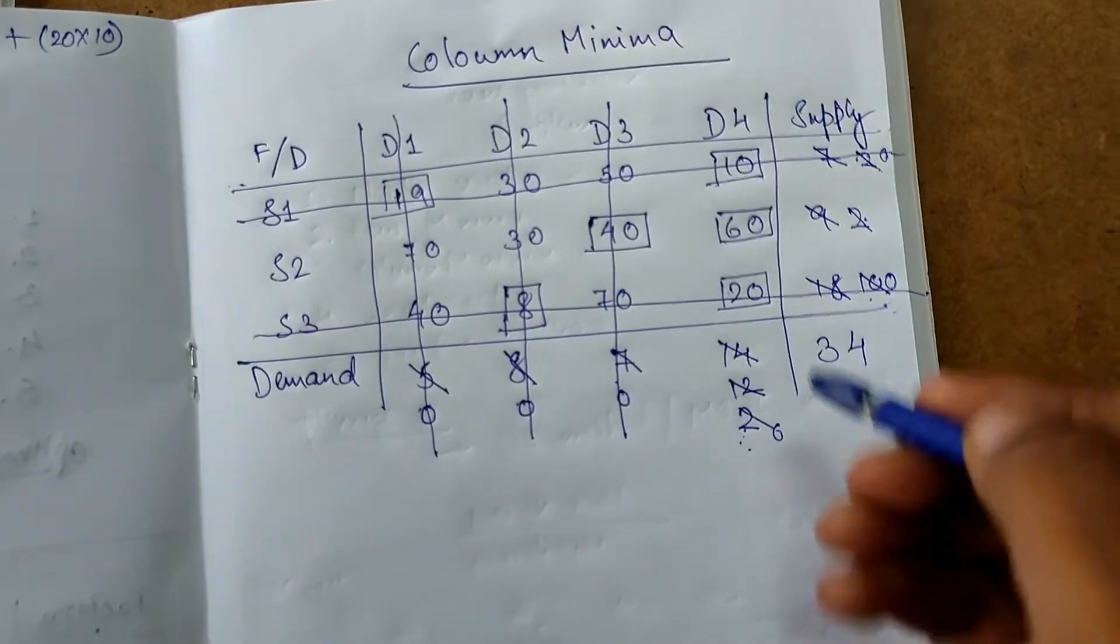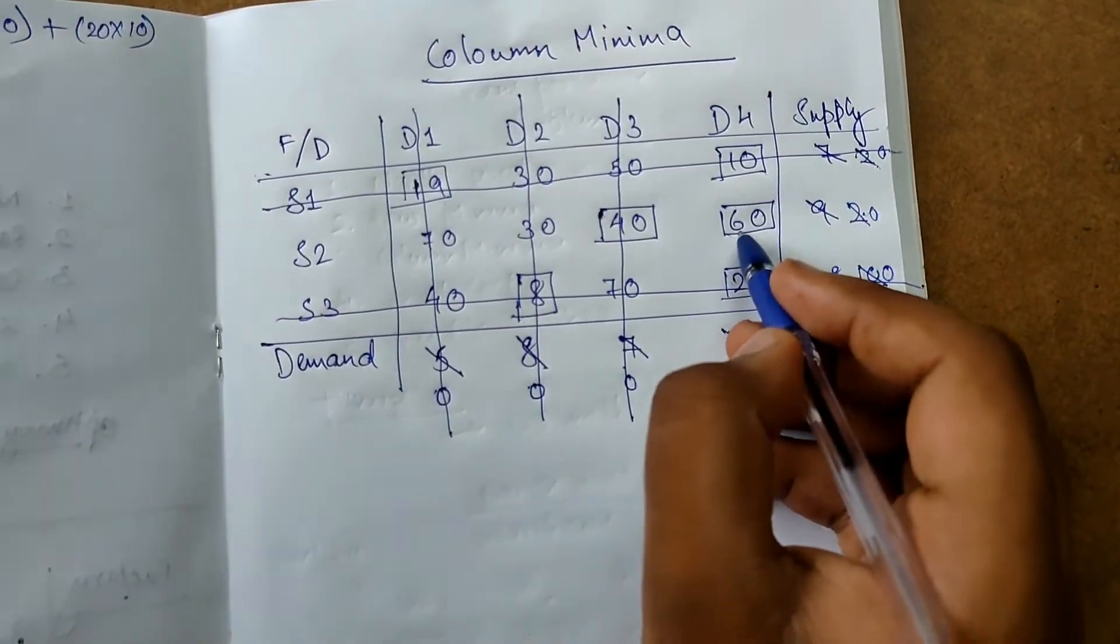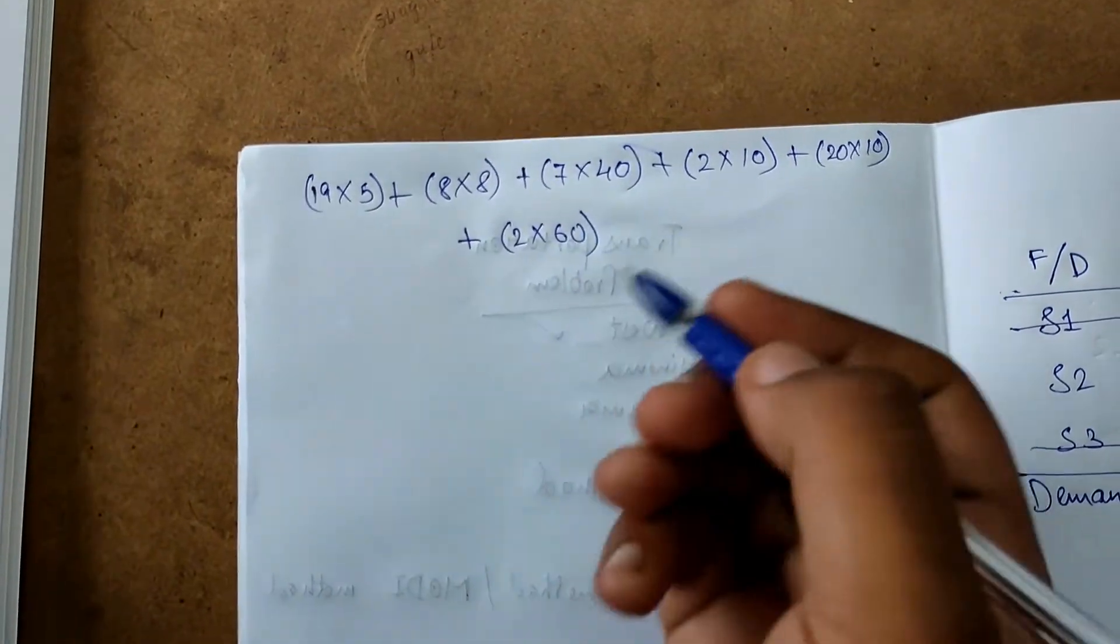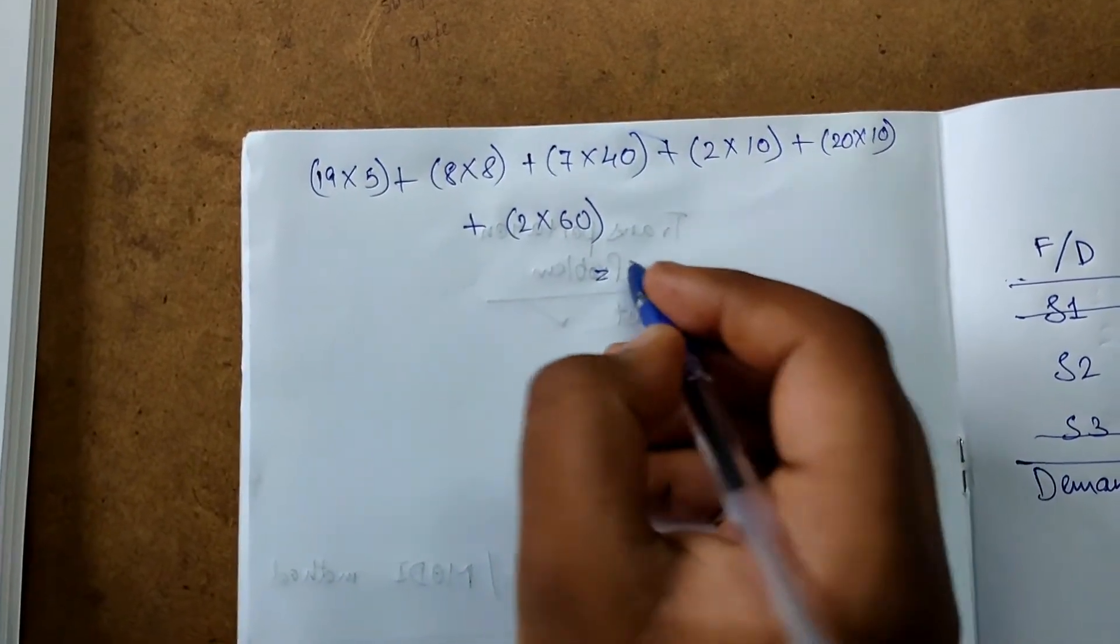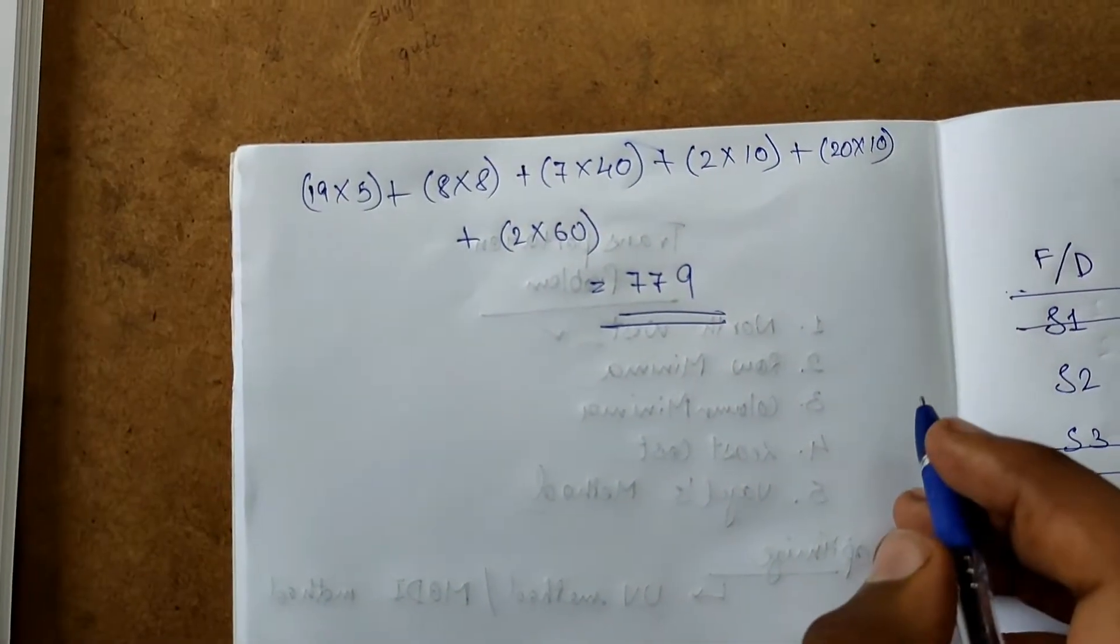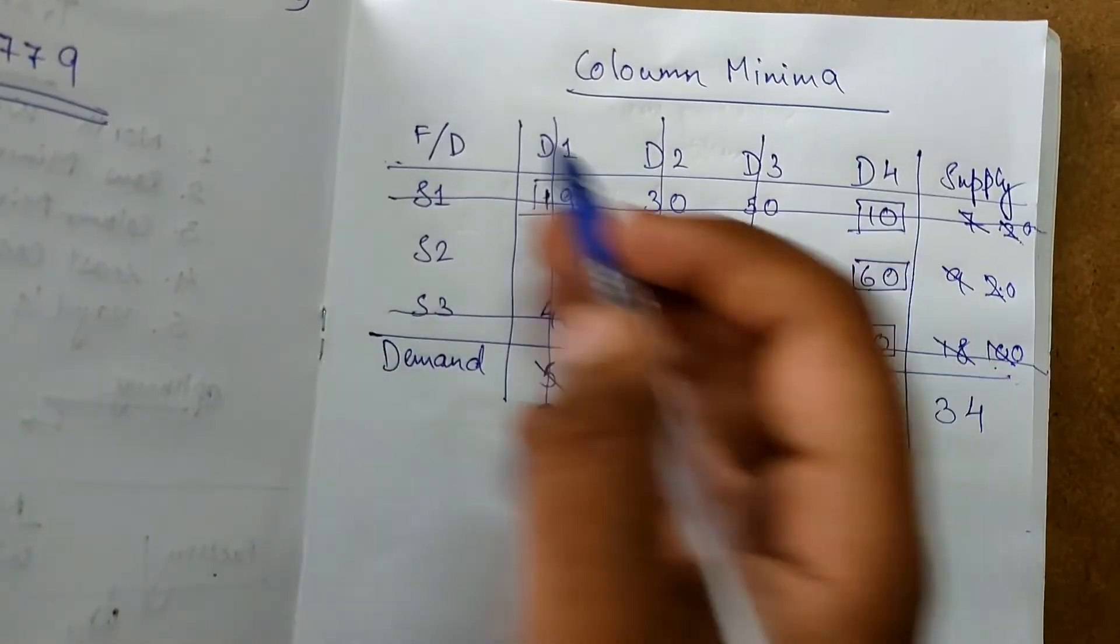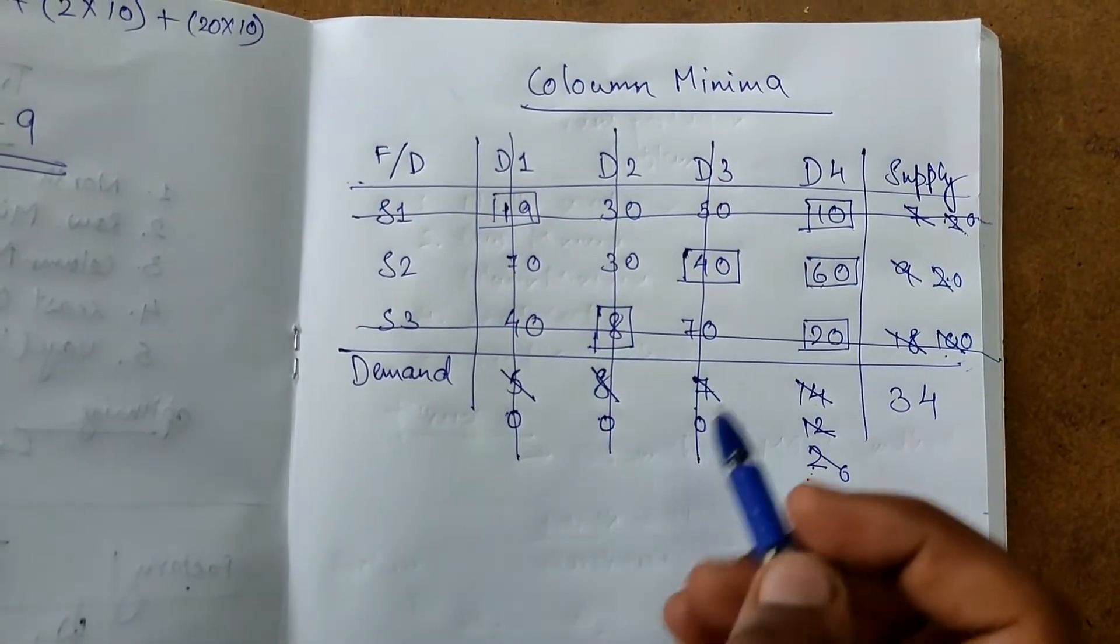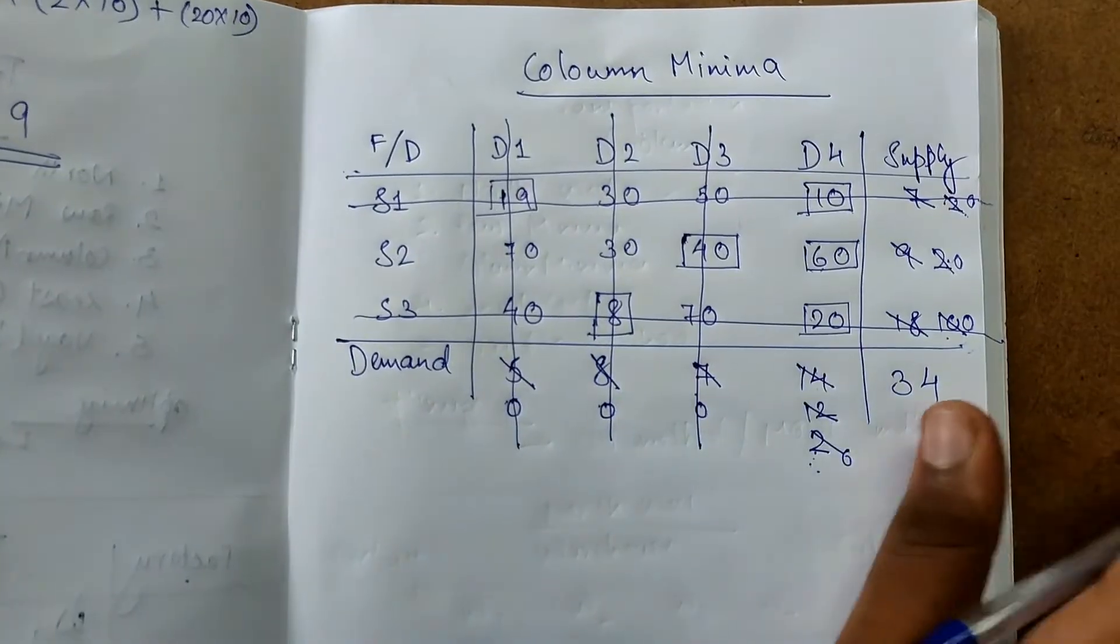Similar values, 0, 0, and this is 2 into 60. 2 into 60 we will get 779. Answer for this transportation problem using column minima. This was column minima.